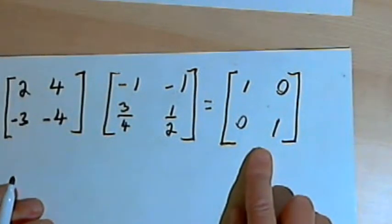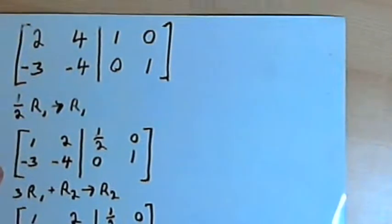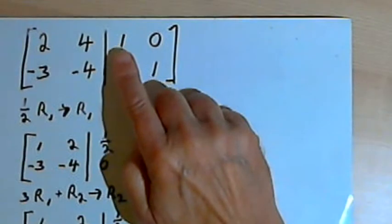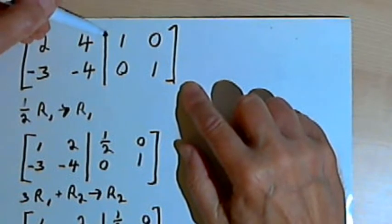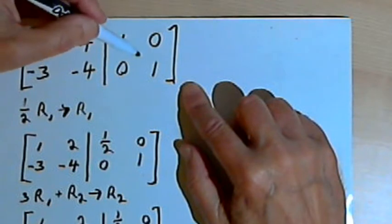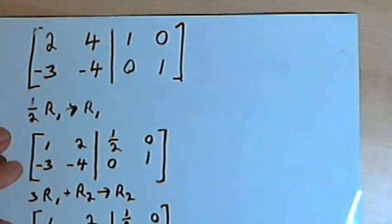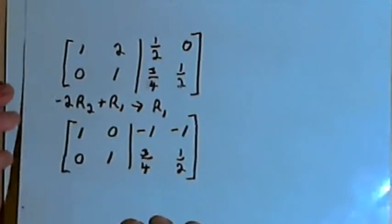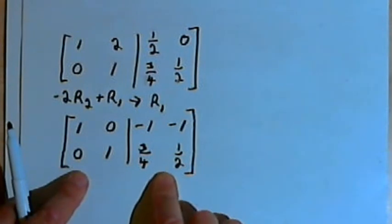And there's the identity matrix. So to go back to that original first step: all you do is take the matrix you want to find the inverse of, put it into an augmented matrix where the right side is the identity matrix, do your reduced row echelon process until you get the identity matrix on the left, and you're going to have the inverse matrix on the right. And that's it. Take care, I'll see you next time.